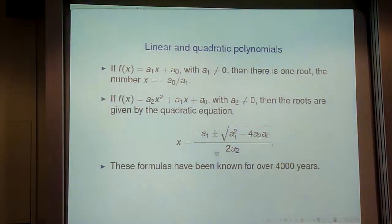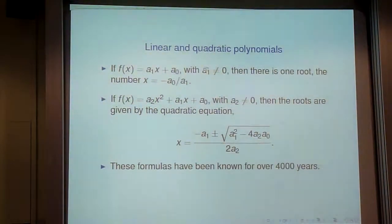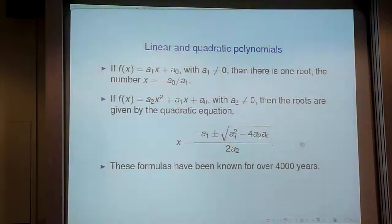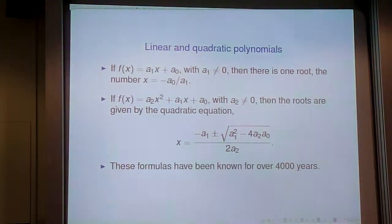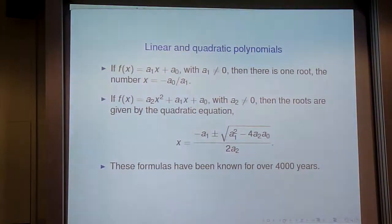For a linear polynomial a₁x + a₀ (with a₁ ≠ 0), there's exactly one root: −a₀/a₁. For a quadratic a₂x² + a₁x + a₀ (with a₂ ≠ 0), the roots are given by the quadratic formula: (−a₁ ± √(a₁² − 4a₂a₀)) / (2a₂). These formulas have been known for a long time — apparently even ancient Babylonian tablets contain prescriptions for solving quadratic equations.